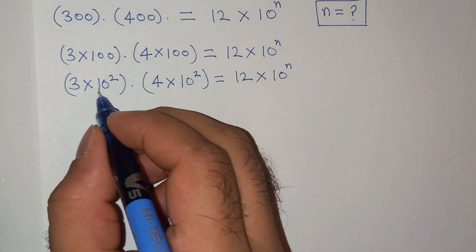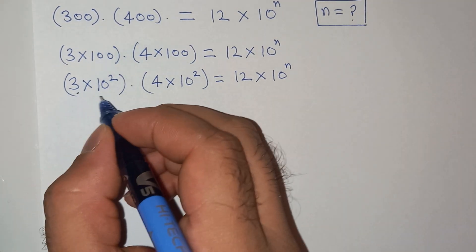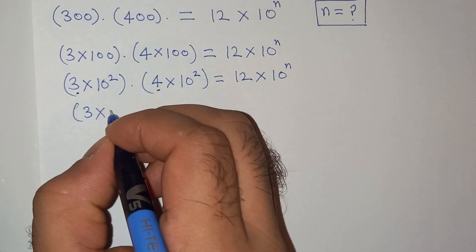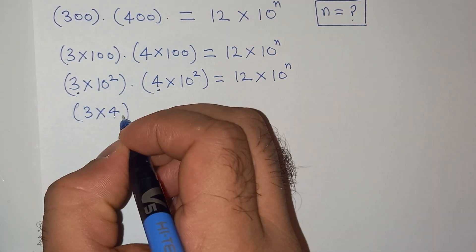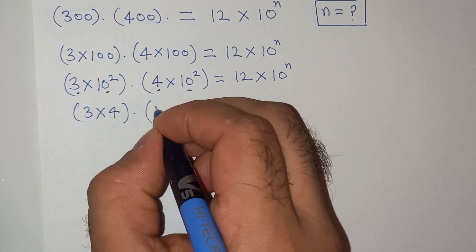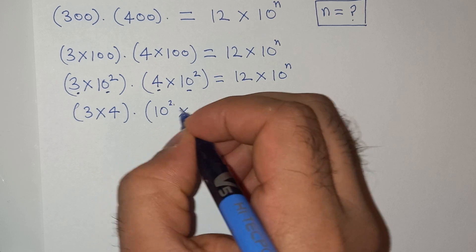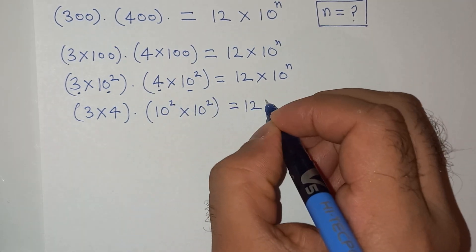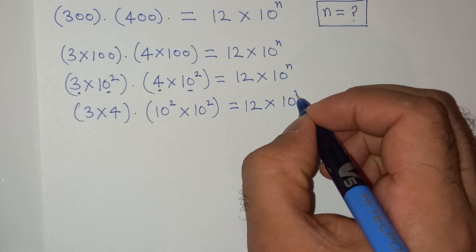Now let's open the bracket and keep this 3 and 4 in one bracket. So this will be 3 multiplied by 4, and this term 10 square and 10 square in another bracket, 10 square multiplied by 10 square, equals 12 multiplied by 10 power n.